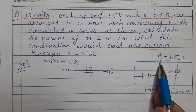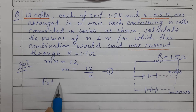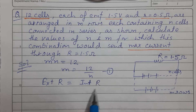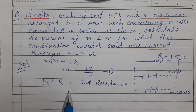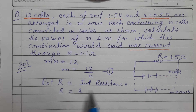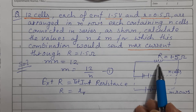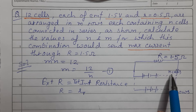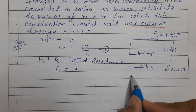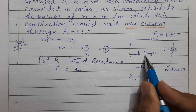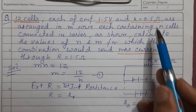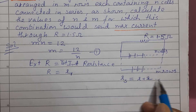Now we need to understand the condition for maximum current. When we take a mixed combination of series and parallel cells, the condition for maximum current is that external resistance equals total internal resistance. For N cells in series, the series internal resistance is N times r, where r is 0.5 ohm.